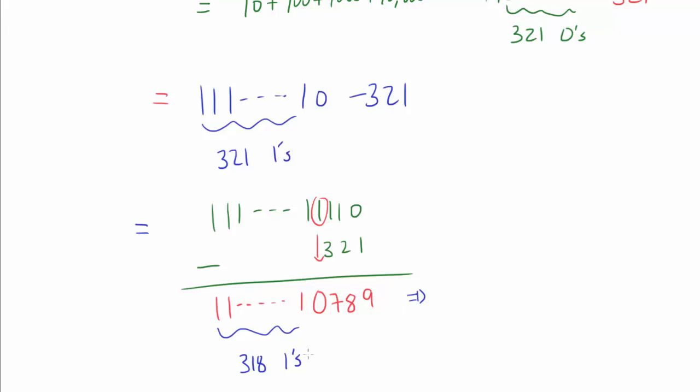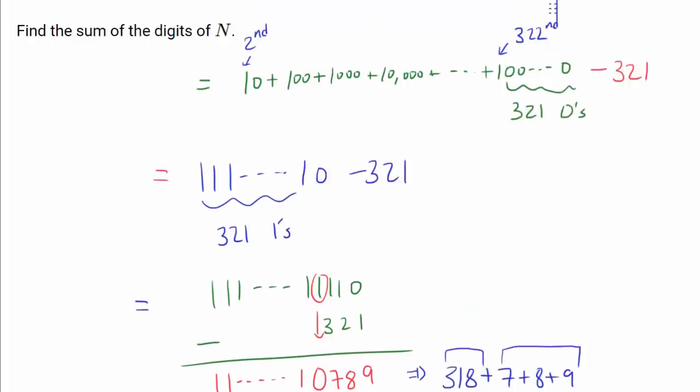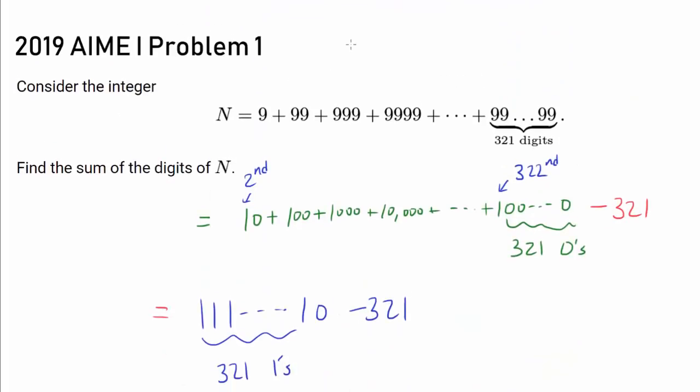So the sum of the digits of this number is 318 + 7 + 8 + 9. Here's the 318, and here are the rest, which is 24. Add that to 318, and we get 342 as our final answer. So let's go all the way back up. Our answer to this question is 342.